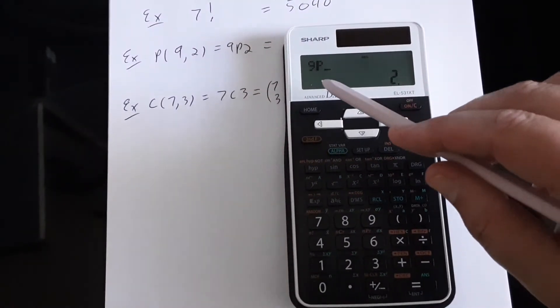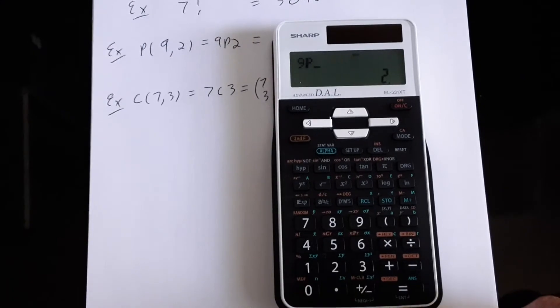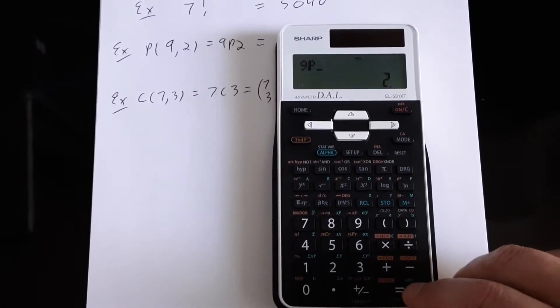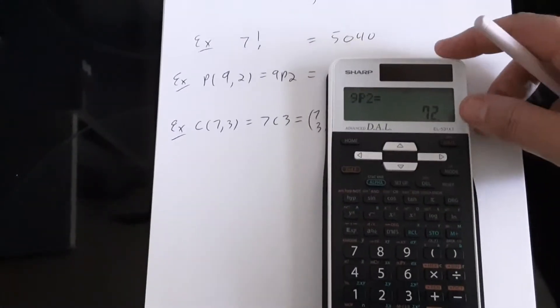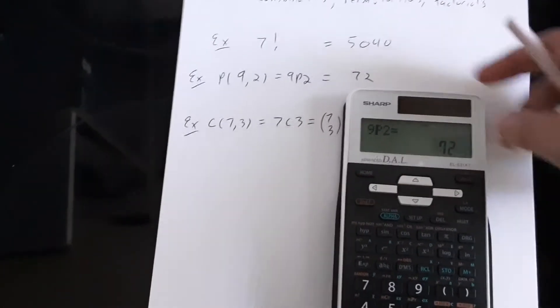You can see in the display window here there's a P, the permutation function has been used. So 9P2 and the answer to that is 72. So if we had nine friends and we wanted to select and arrange two of them, that could be done in 72 ways.